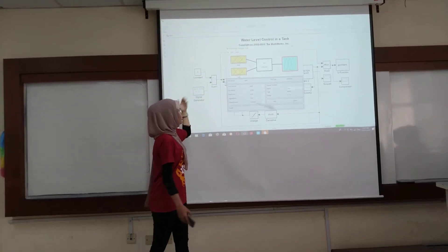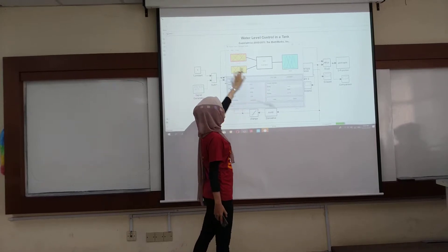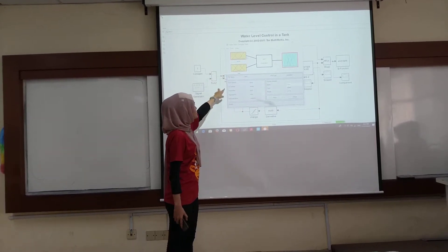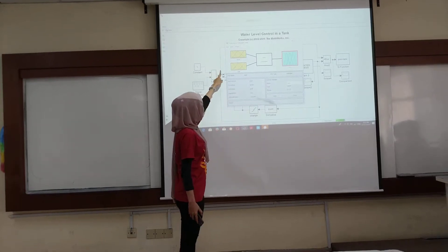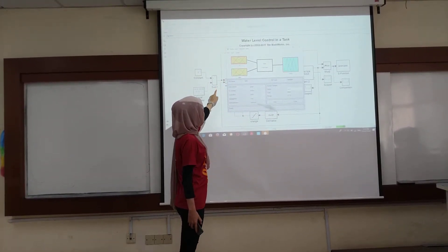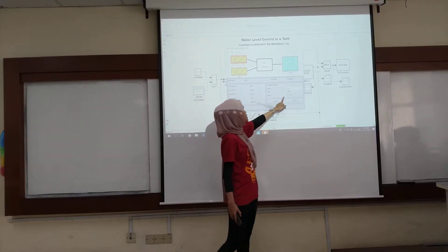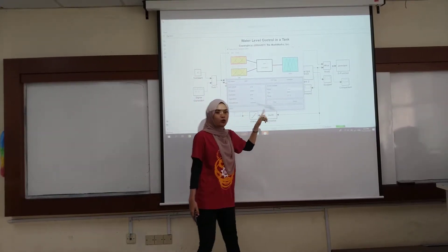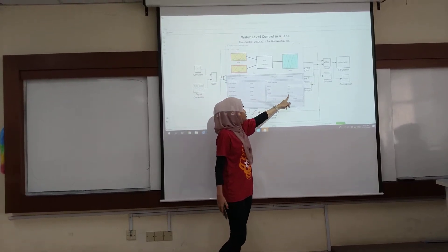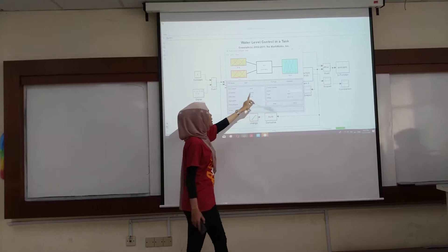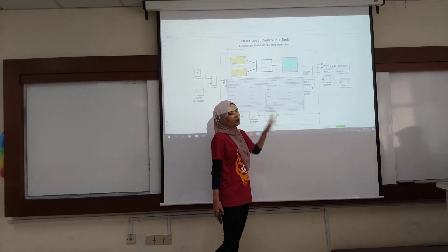In our group, we have two inputs and one output. The first input is level, the second is rate, and the output is valve. For the level, the range of the fuzzy logic is between negative 1 to 1, for the rate the range is negative 0.1 to 0.1, and for the output we have negative 1 to 1.